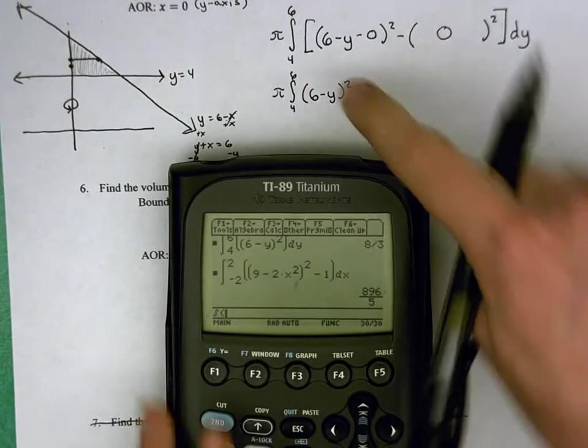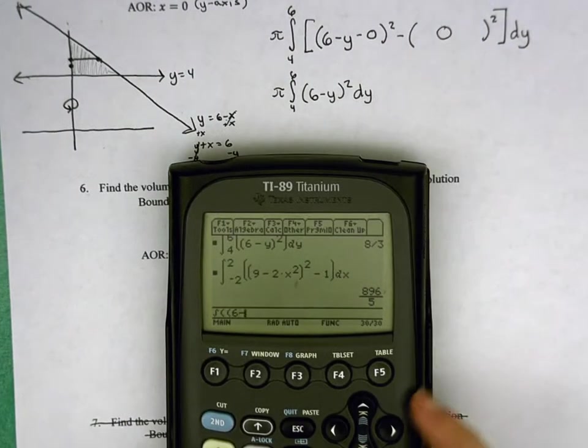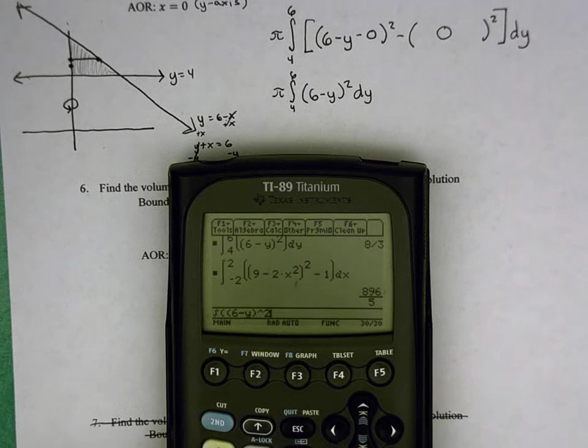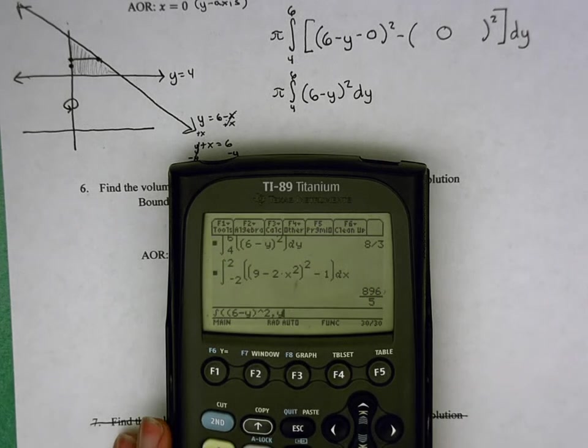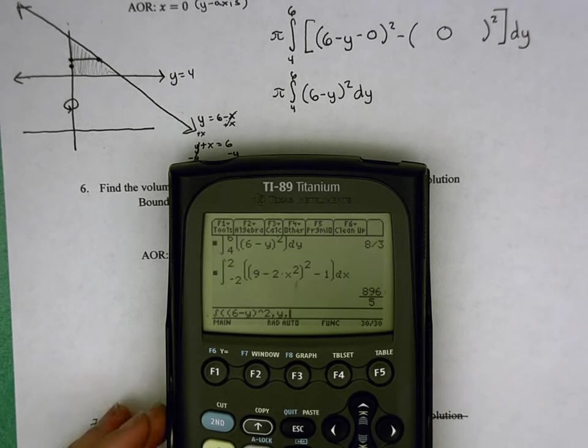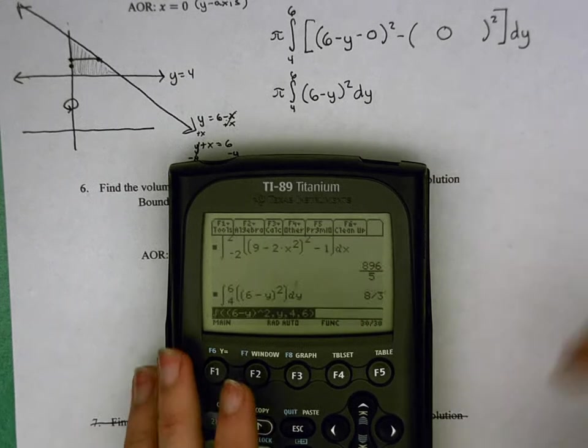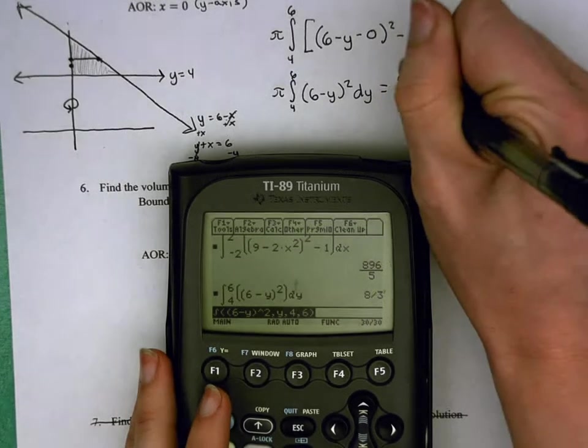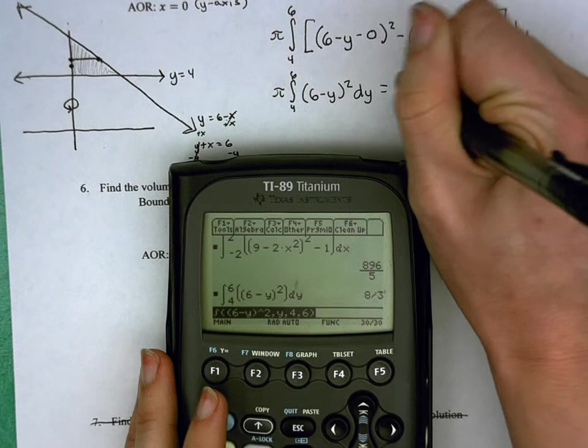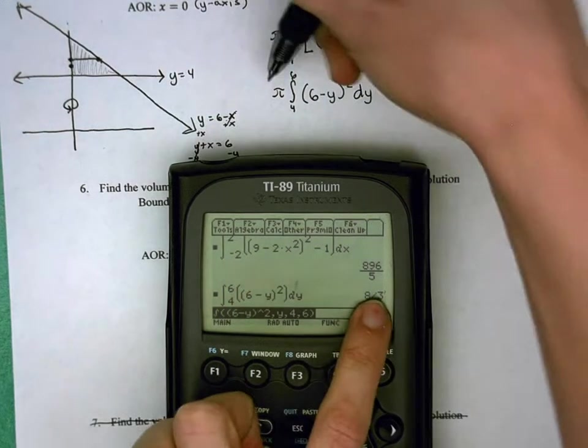Type in our function first, 6 minus y squared, comma y to acknowledge the dy, comma my lower which is 4, comma my upper which is 6. Hit enter, and you get 8 pi over 3. You get 8 thirds, and then don't forget the pi.